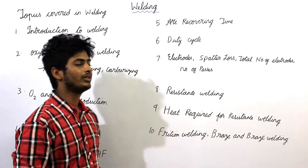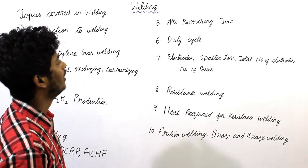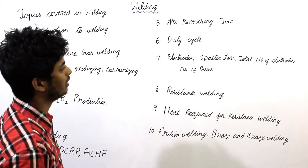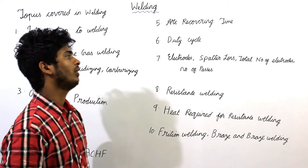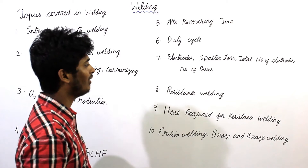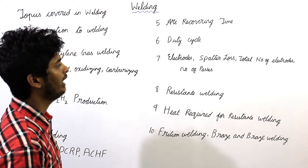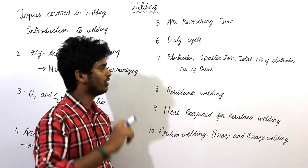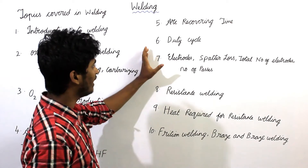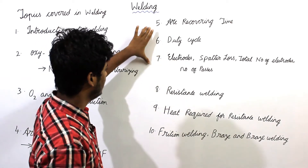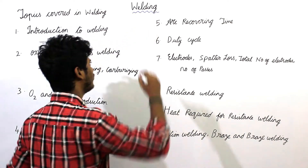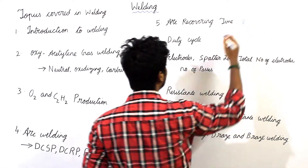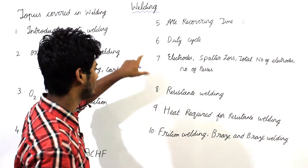The sixth topic is duty cycle. Duty cycle is given by the percentage of time during which the arc is on without overrating the vital elements in the welding equipment. We will see what is duty cycle and small calculations. Topics five, six, and seven are very important for solving problems in the GATE exam — most of the problems are asked on these topics only.